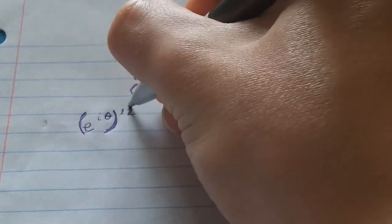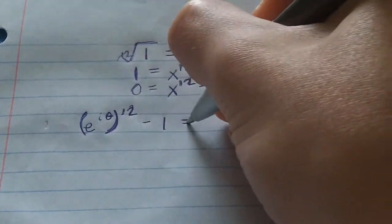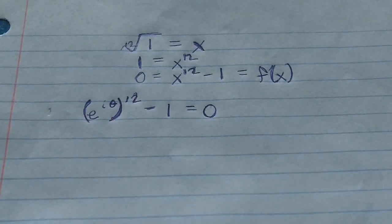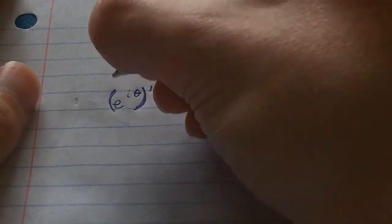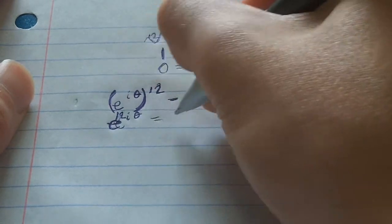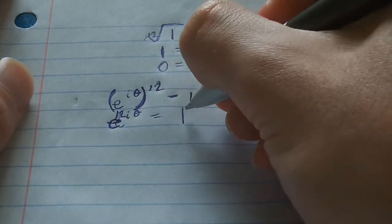So e to the i theta to the twelfth power, therefore, minus one, does equal zero. That's what we're forming. And so therefore, e to the i theta, or I should say e to the twelfth i theta equals positive one.